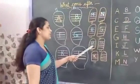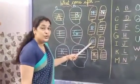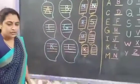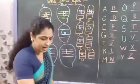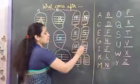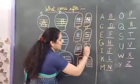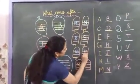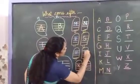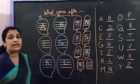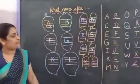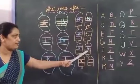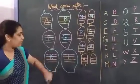Next, which letter is this? U. U for umbrella. After U for umbrella comes V for van. How to make V? One landing line and one more landing line — it's made V. V for van.